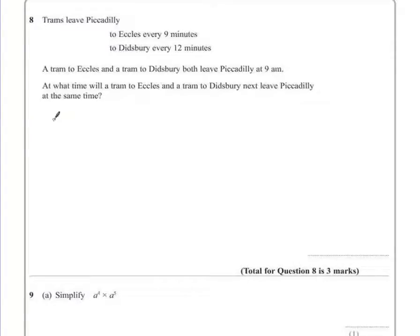So if we start with Eccles, the tram to Eccles will leave after 9 minutes, then another 9 minutes later, so 18, 27, 36, 45, 54. It could go on as long as we needed to because it is every 9 minutes.